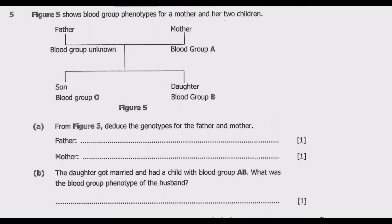Figure 5 shows blood group phenotypes for a mother and her two children. We have the father whose blood group is unknown, the mother's blood group is A, the son's blood group is O, and the daughter's blood group is B. Question A: from figure 5, deduce the genotypes for the father and mother.